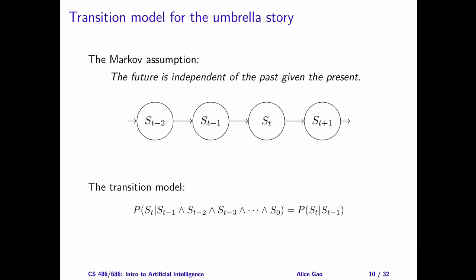Let's model our umbrella story as a first-order Markov process. This model makes a key assumption called the Markov assumption. The Markov assumption says that the current state has sufficient information to determine the next state. We do not have to look at older states in the past. I have always remembered this assumption using this sentence: The future is independent of the past given the present.